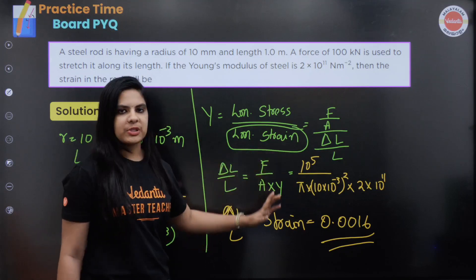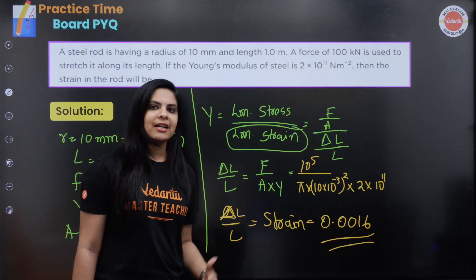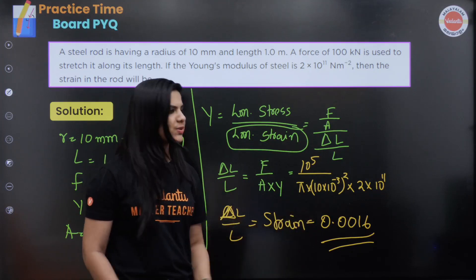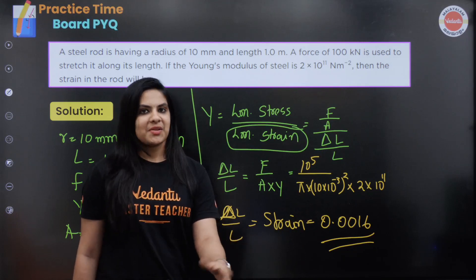So we substitute the values, delta L by L. The value is 0.0016.